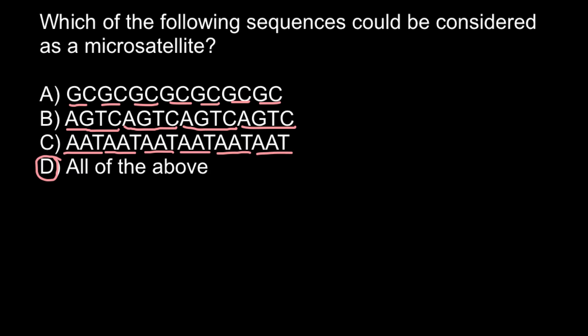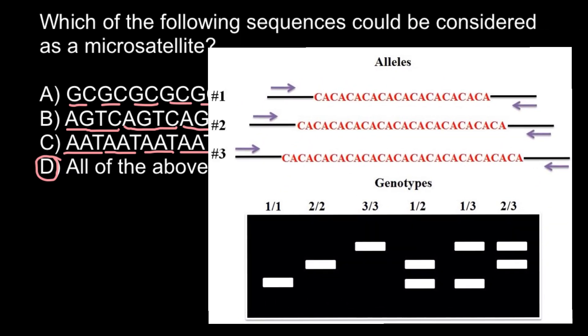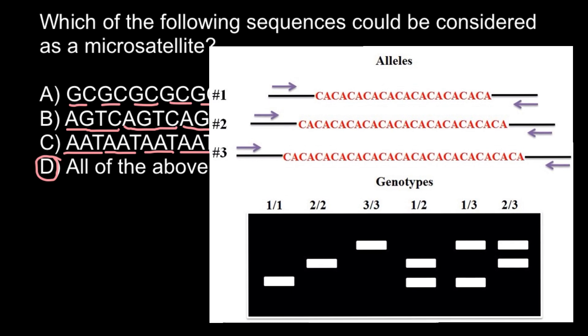Why is it important to know microsatellites and their locations in our genome? We have thousands of locations where bases have a certain pattern and repeat — whether it can be two, three, four bases or more. The human genome has many places where a sequence repeats, and usually this is non-coding sequence that doesn't code for any protein.